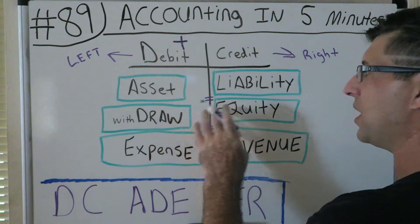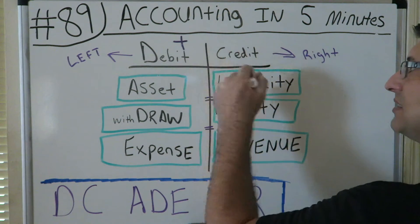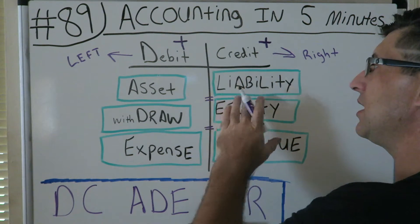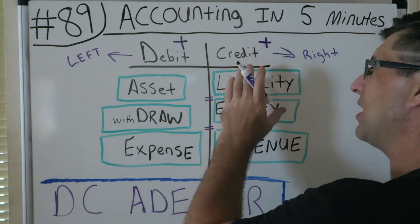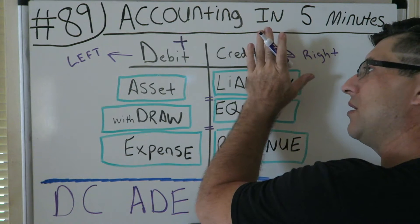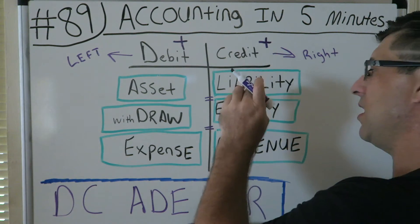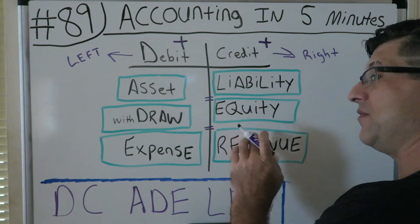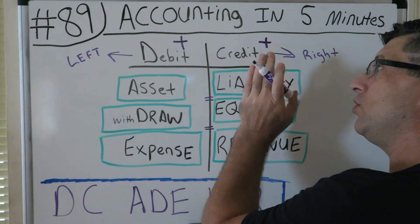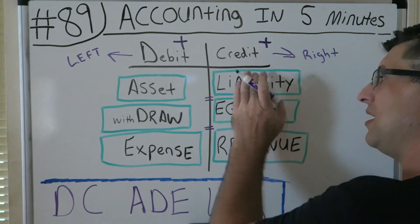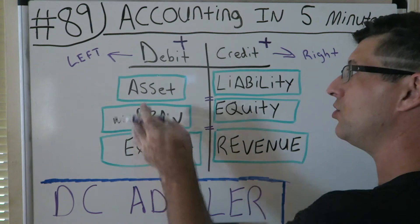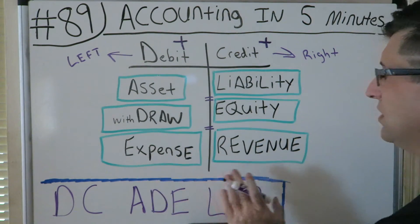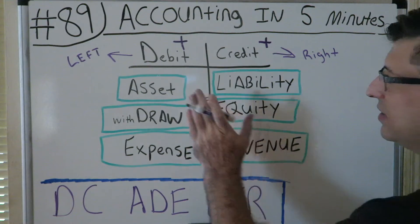These are all shown in their positive forms. For liabilities — if a liability is going up, it's going to be a credit. Same with equity and revenue: if Liability, Equity, or Revenue is going up in value, you credit them. If either of these three are going down in value, you debit it.